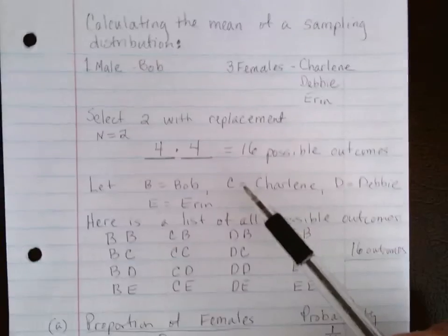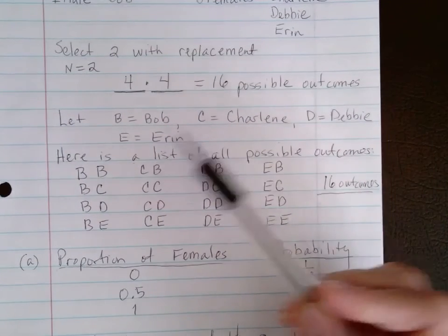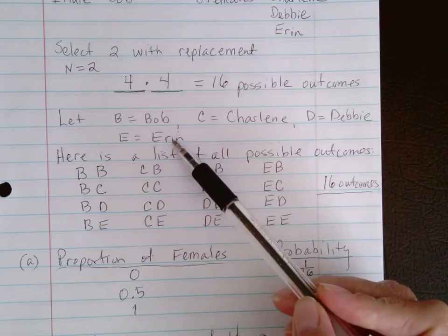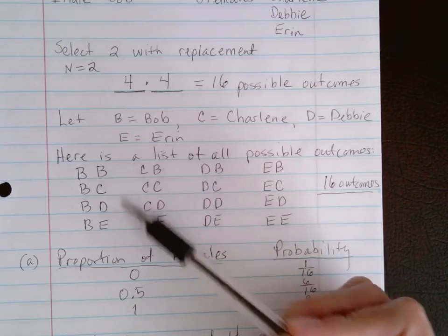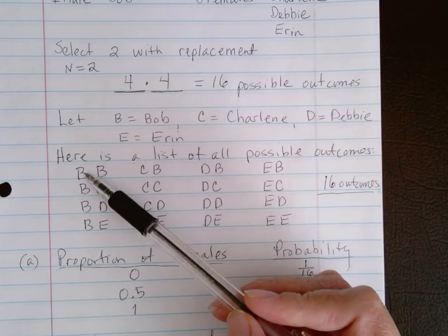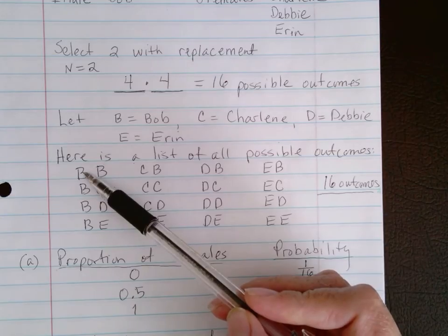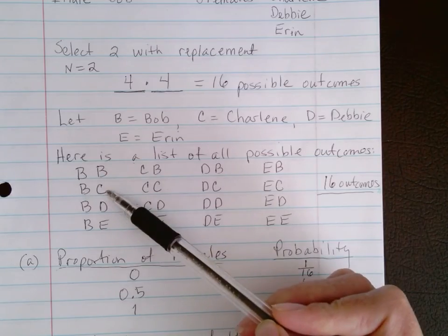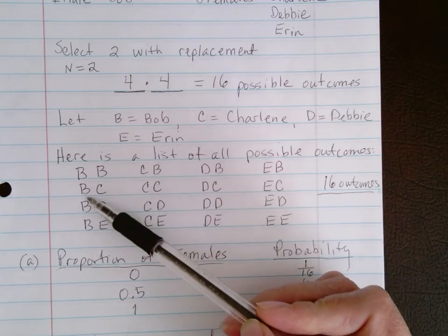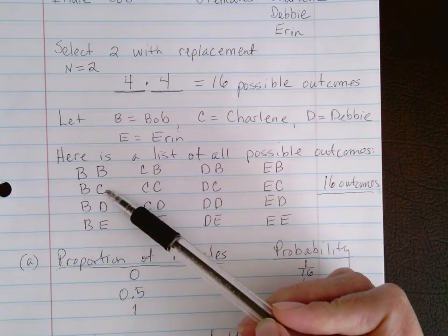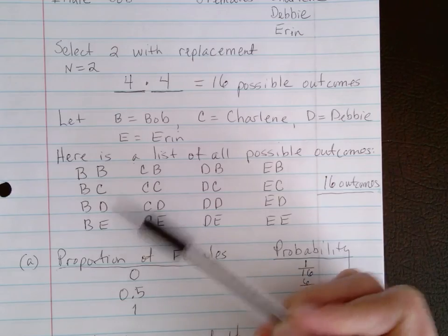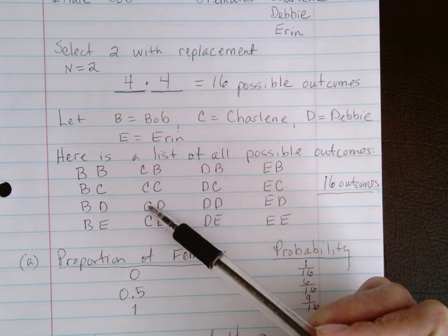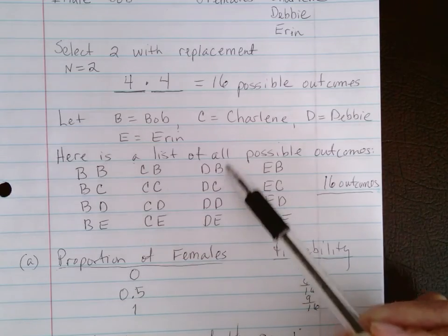I want to list them all out. To do this, I'm going to say B is for Bob, C is for Charlene, D is for Debbie, and E is for Erin. So here's a list of all these. The first selection could be Bob, and then we could get Bob again, so that would be two males. The first selection could be Bob, the second one could be Charlene. So in this selection, we'd have one male and one female. I went through and listed this out: B-D, B-E, and then Charlene with Bob, Charlene with Charlene, Charlene with Debbie, and so on. So look at how I listed these out.